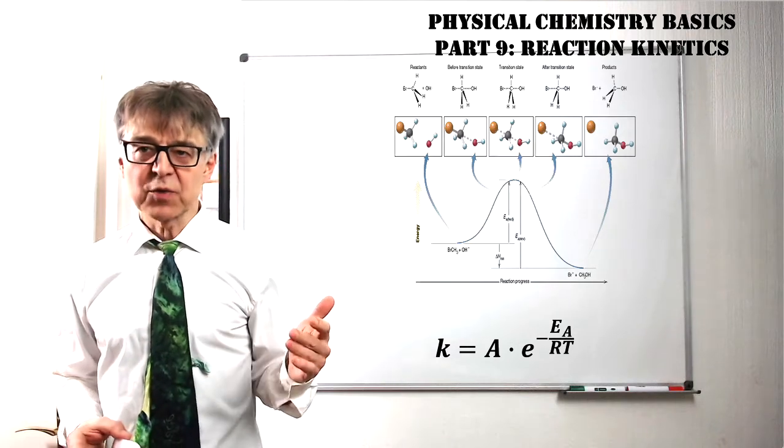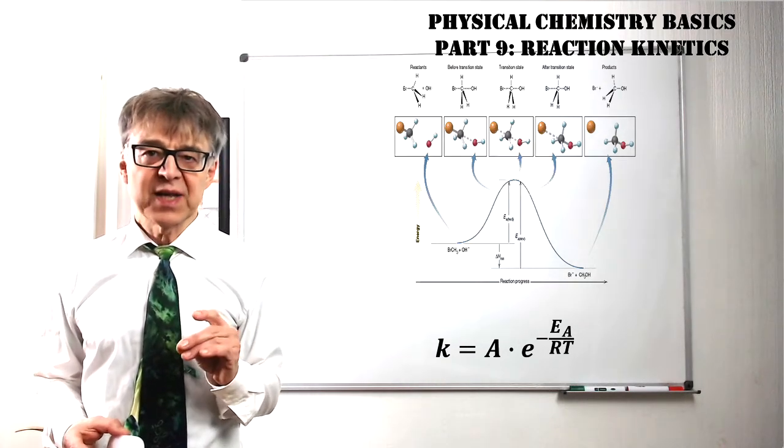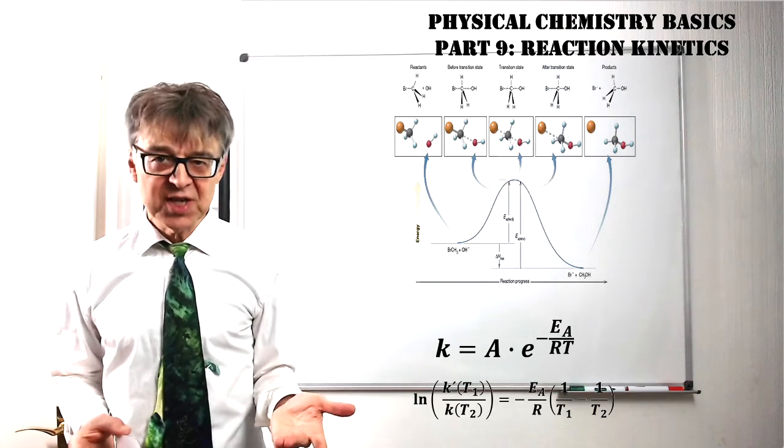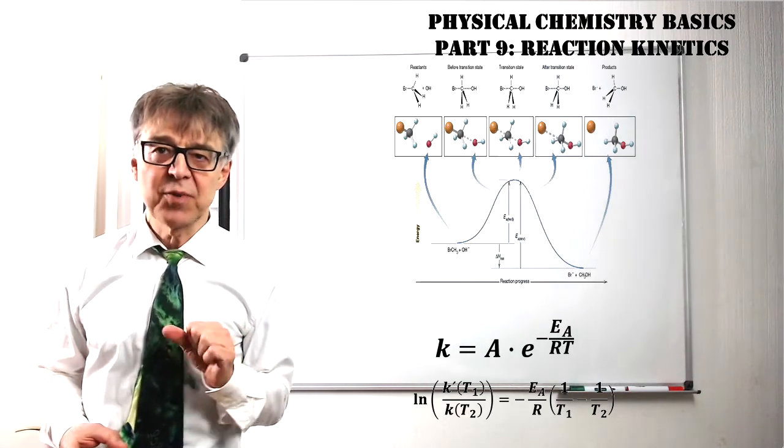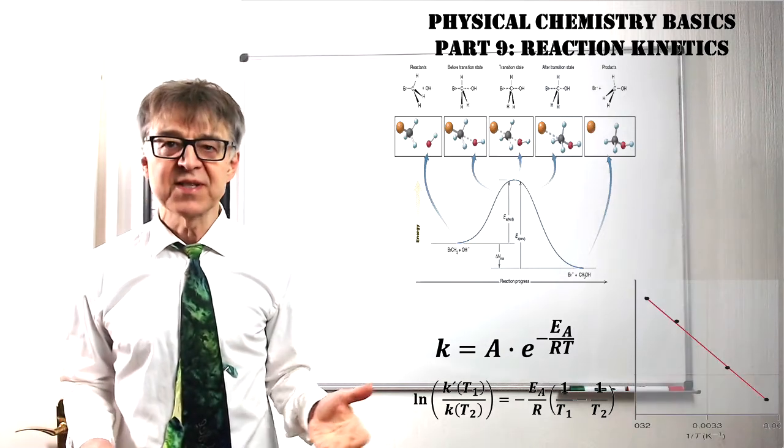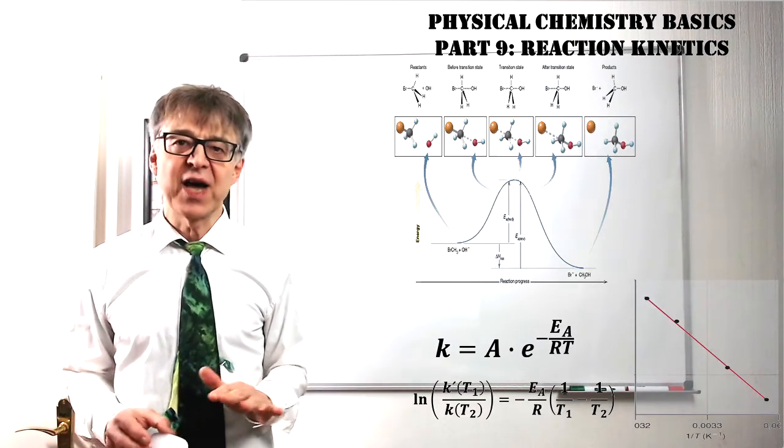With the Arrhenius equation, we can quantify the influence of temperature on the reaction rate. We obtain the kinetic parameters of activation energy and frequency factors by evaluating the data using the Arrhenius plot. If we know the parameters, we can determine rate constants, conversion rates, and reaction times for any temperature.